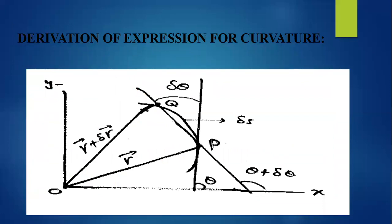In general, curvature is the rate of bend of a curve. Mathematically, if r is a unit speed curve with parameter s, then its curvature κ at point r(s) is defined as κ(s) = |r''(s)|, where r'' = T' (the derivative of the tangent vector), so it is the arc rate of rotation of the tangent.